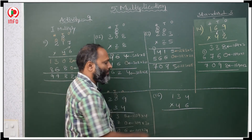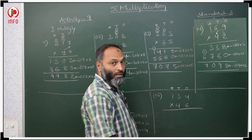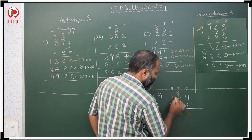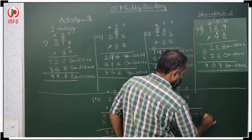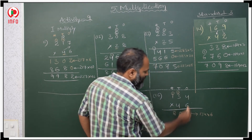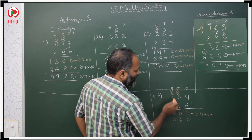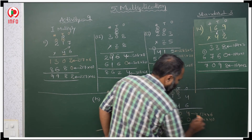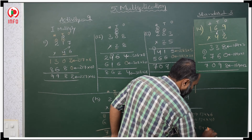In the same way for 134 with 46: ones, tens, hundreds. First start with 6: 6 fours are 24, carry 2; 6 threes are 18, 18 plus 2 is 20, carry 2; 6 ones are 6, 7, 8. This is the product of 134 with 6. Now start with 4 in tens place, keep 0 first. 4 fours are 16 carry 1; 4 threes are 12, 12 plus 1 is 13, write 3 carry 1; 4 ones are 4 plus 1 is 5. This is the product of 134 with 40, giving the final product of 134 with 46.